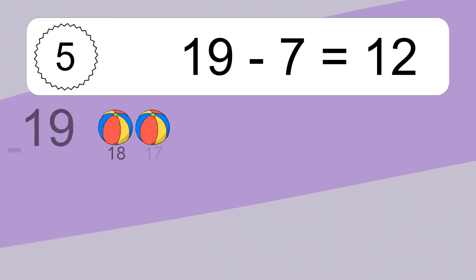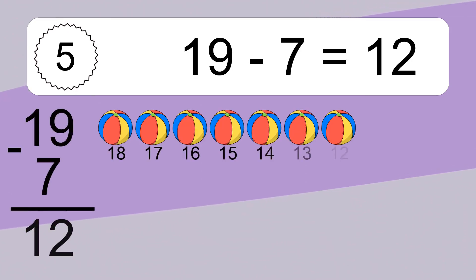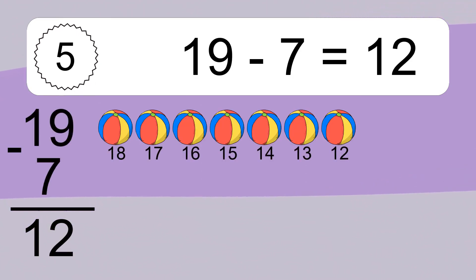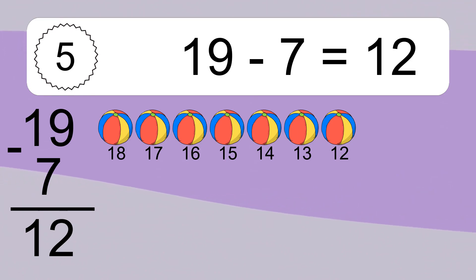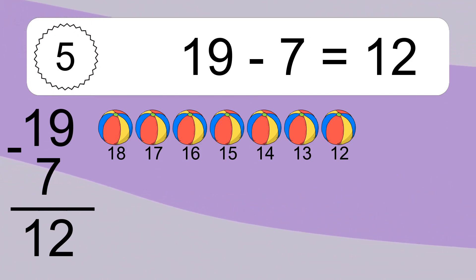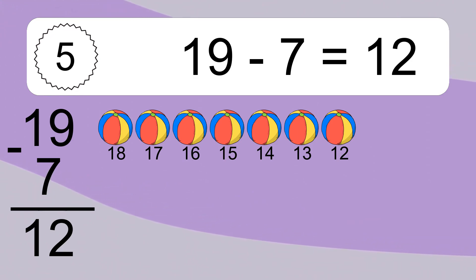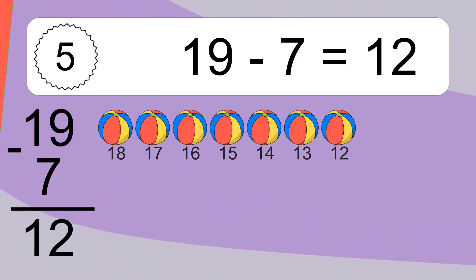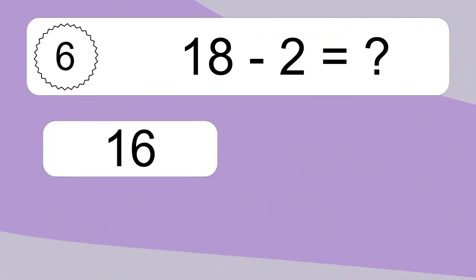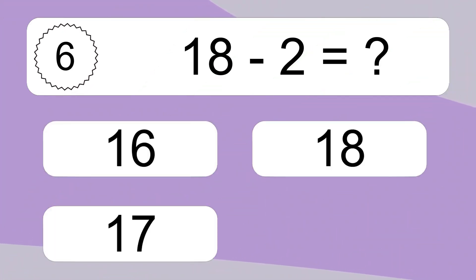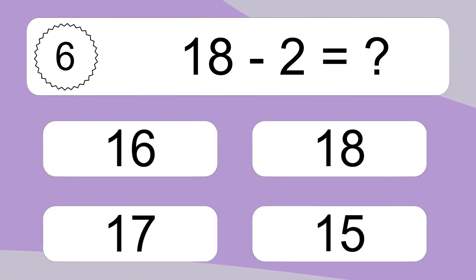19 minus 7 equals what? 19 minus 7 equals 12. Let's count it: 18, 17, 16, 15, 14, 13, 12.